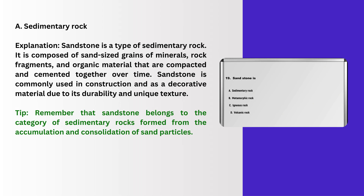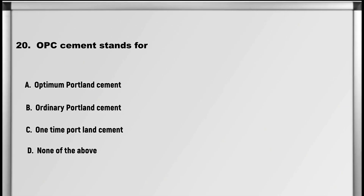Explanation: Sandstone is a type of sedimentary rock. It is composed of sand-sized grains of minerals, rock fragments, and organic material that are compacted and cemented together over time. Sandstone is commonly used in construction and as a decorative material due to its durability and unique texture. Tip: remember that sandstone belongs to the category of sedimentary rocks formed from the accumulation and consolidation of sand particles.